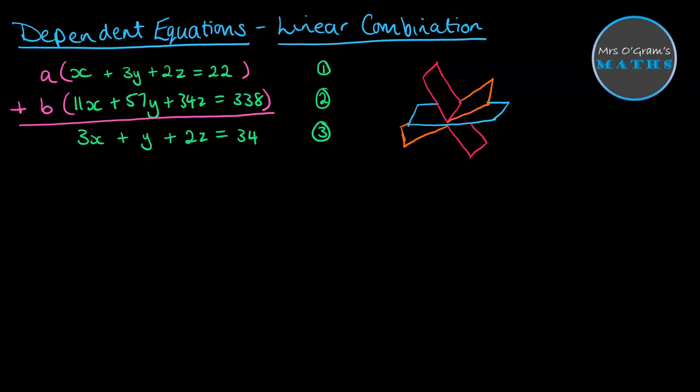Now, from there, we can match up the x's, y's and z's to work out what a has to be to make that true. So if we look at the x's, for the x coefficients, we get a plus 11b is equal to 3.